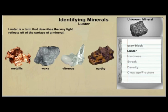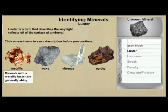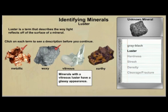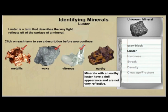Click on each term to see a description before you continue. Metallic: minerals with a metallic luster have a shiny appearance and reflect light. Waxy: minerals with a waxy luster look like they are coated with a layer of wax. Vitreous: minerals with a vitreous luster have a glassy appearance. Earthy: minerals with an earthy luster have a dull appearance and are not very reflective.